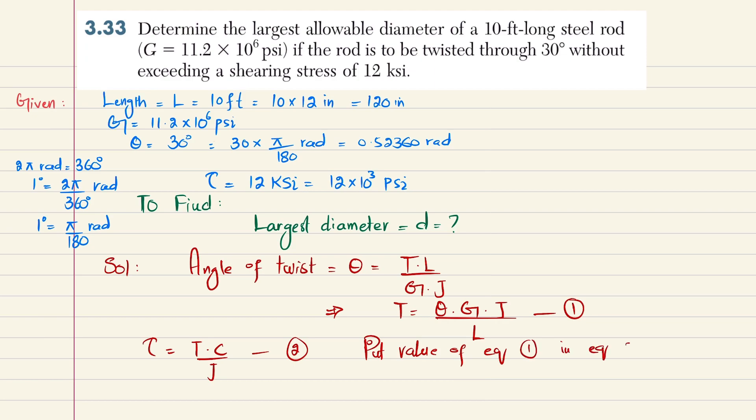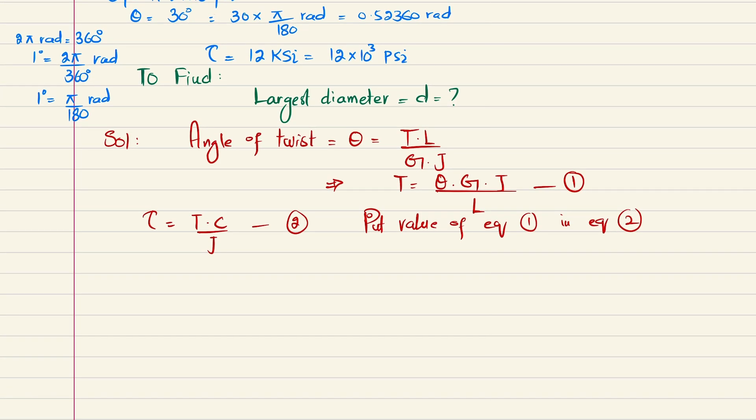What we will do is put the value of equation one into equation two. So equation two becomes: shear stress equals T, which is replaced by θGJ/L, times c/J.